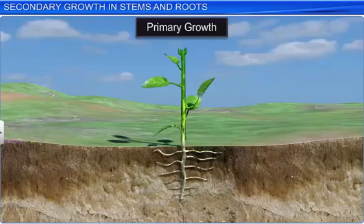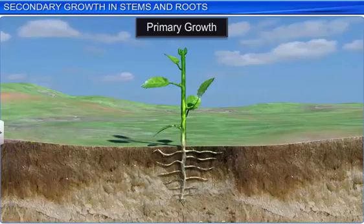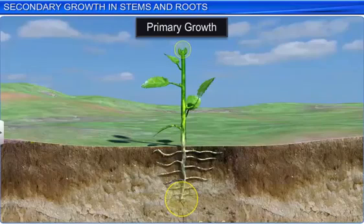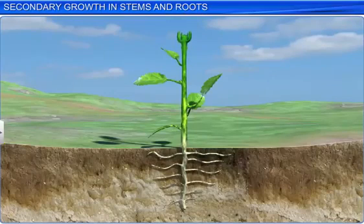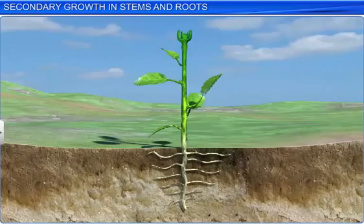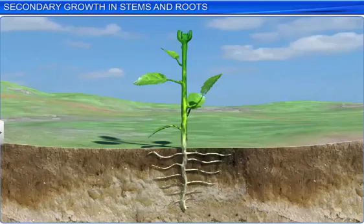The growth of plants is an ongoing process. Primary growth, which takes place due to the primary meristem, results in the lengthening of stems and roots. Another growth process begins after the period of primary growth and leads to the formation of the woody axis or an increase in the girth of the stem and roots. This is known as secondary growth.